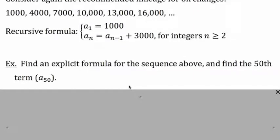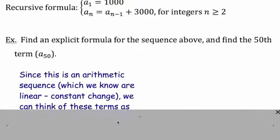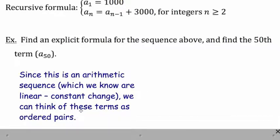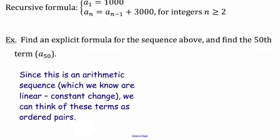The first thing we want to do when looking for an explicit formula for an arithmetic sequence is understand the relationship between each term. Since we add the same amount every single time, that's a constant change between terms. We know that in any situation with a constant change, we can represent it with a linear equation. Since this is an arithmetic sequence — which is linear because it's a constant change situation — we can think of the terms as ordered pairs and use strategies we've learned to find an equation for the line.